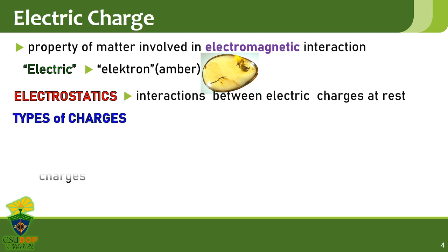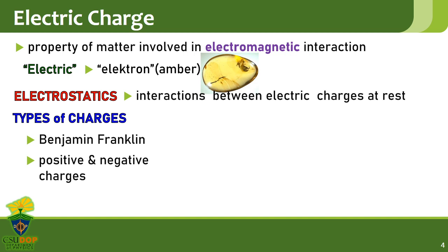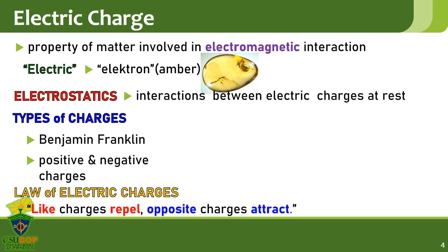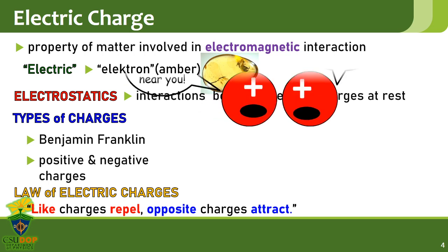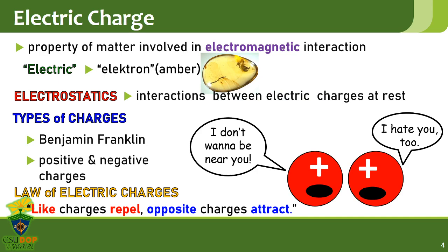Benjamin Franklin was the one who categorized charges as either positive or negative. Electrons in an atom are negatively charged, while protons are positively charged. Whenever there are more positive charges than negative charges in a material, we say that that material has a net positive charge. When there are equal numbers of positive and negative charges in a material, then that material is said to be neutral. Electric charges interact in such a way that they repel charges with the same sign and attract charges of the opposite sign. This has come to be known as the law of electric charges. A positive charge will repel another positive charge but will attract a negative charge.